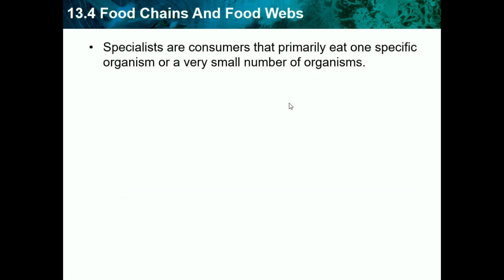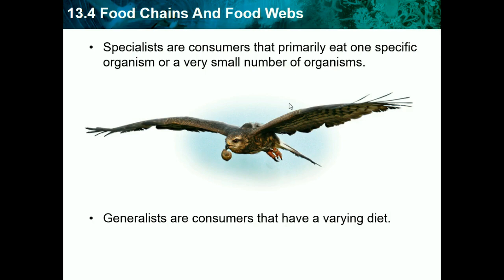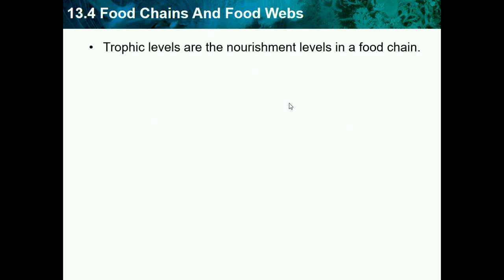Specialists are consumers that primarily eat one specific organism or a very small number of organisms — it's a specialist that only does one special thing. Generalists are consumers that have a varying diet, which would probably describe people, because we eat all sorts of things.